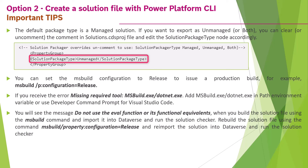A second tip: instead of debug mode, you can set the MSBuild configuration to release for production builds by adding the property: msbuild /p:configuration=release. A third tip: if you receive the error 'missing required tool msbuild.exe or .NET', you may need to add it to your PATH environment variable or use the Developer Command Prompt in Visual Studio Code.